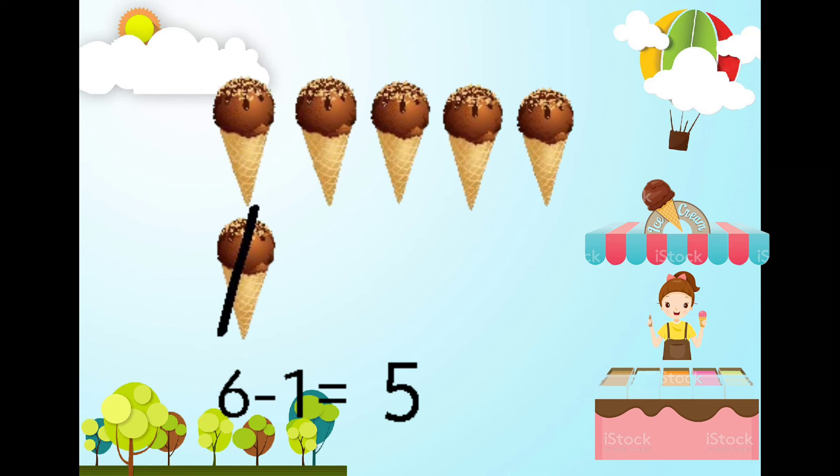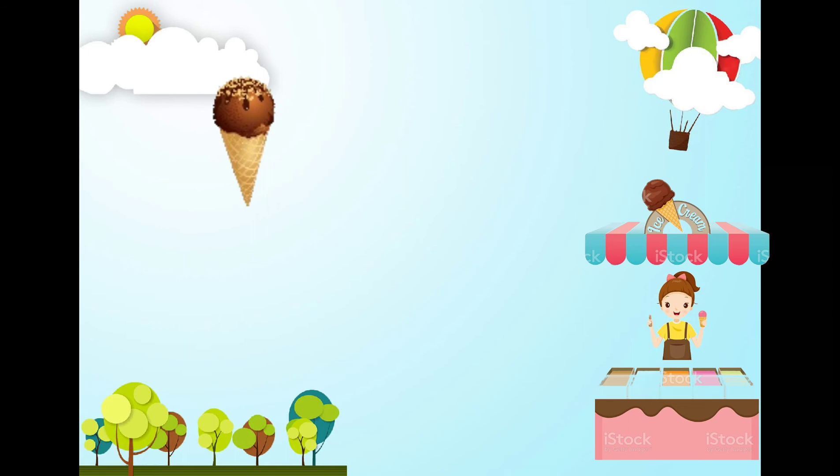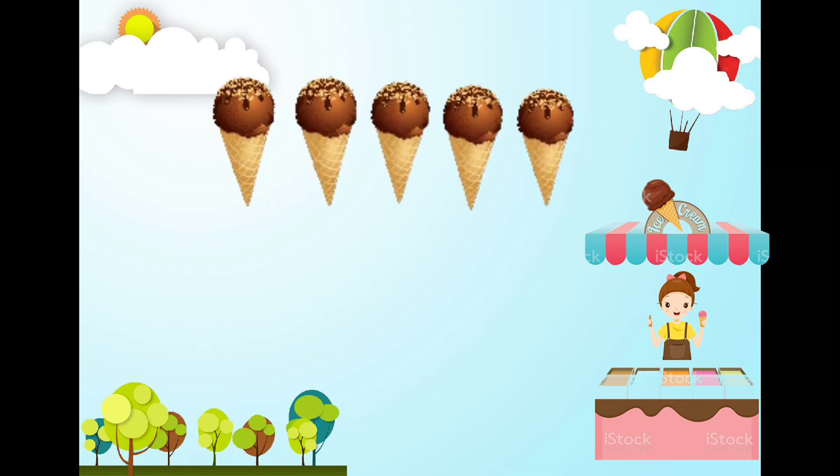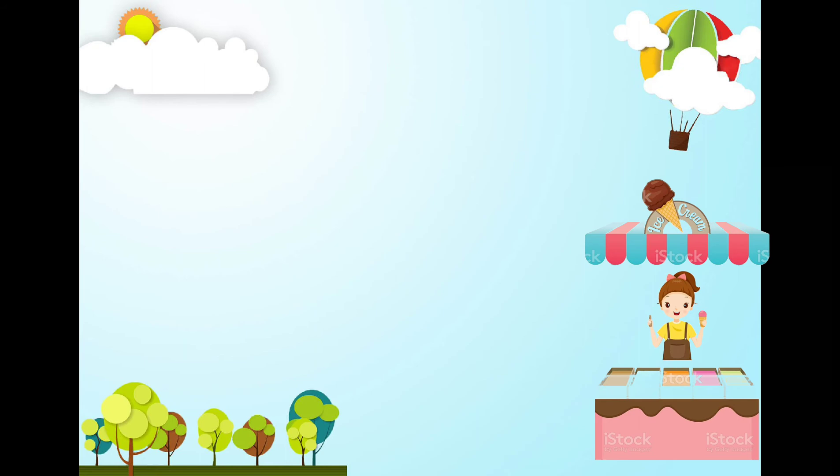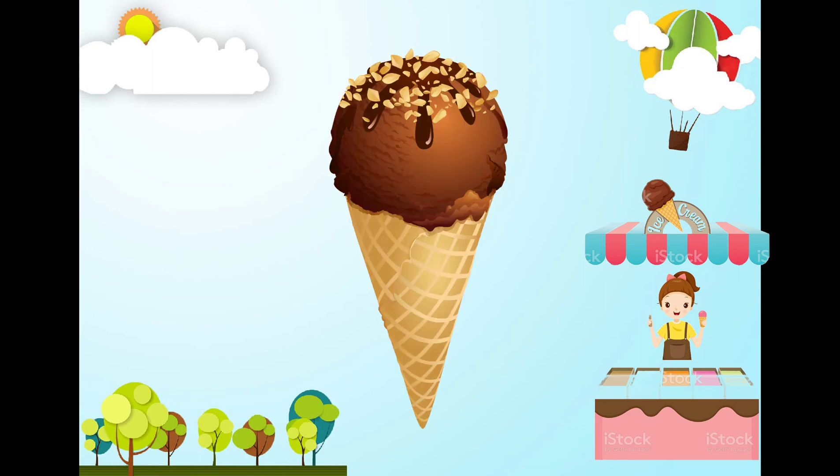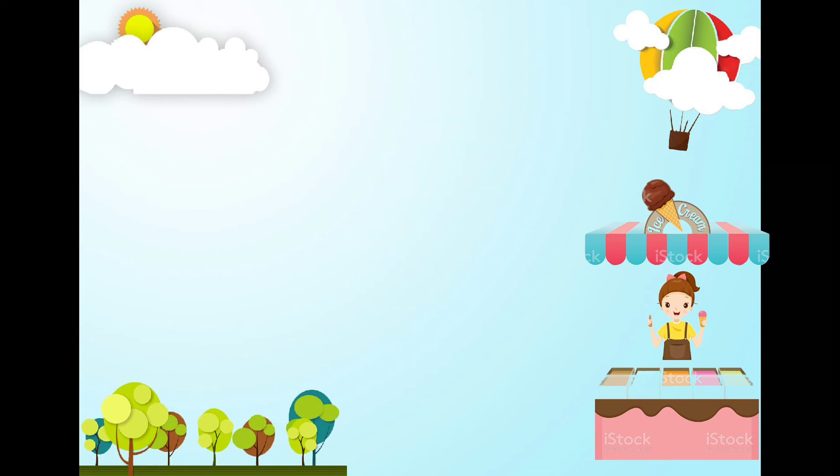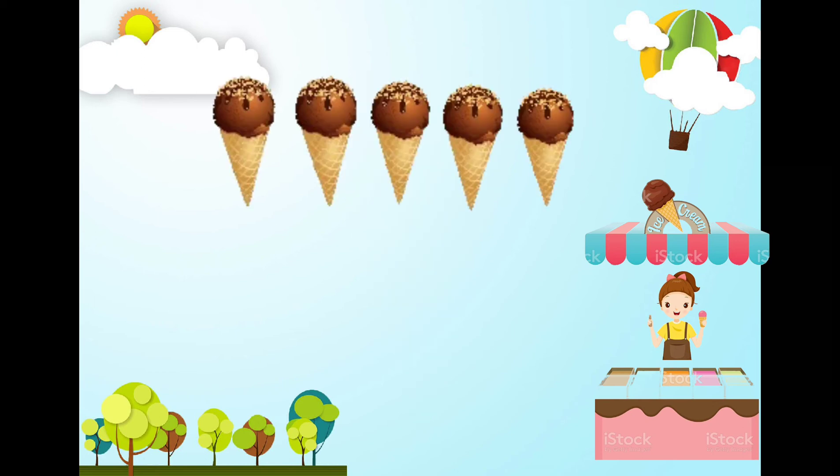Now, we still have 5 ice creams. Let's count it. 1, 2, 3, 4, 5. Hmm, I will give 1 ice cream to Chin. Now, let's do the subtraction. 5 ice creams minus 1 ice cream. Let's count if how many are left. 1, 2, 3, 4. You've got it. 5 minus 1 equals 4.